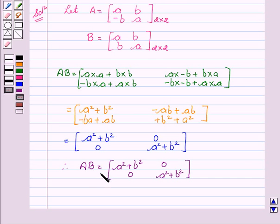Therefore, AB equal to matrix A square plus B square, 0, then 0, A square plus B square, which is also a 2 cross 2 matrix.